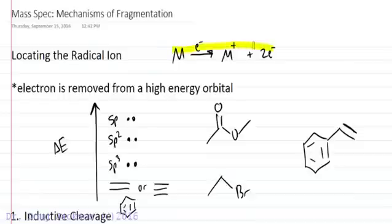So in electron impact ionization, we will take our molecule, our neutral molecule, expose it to an electron beam. It will form the molecular ion and where does that ion charge go? The molecular ion is also a radical, so we put that radical symbol there. The rule of thumb is the electron is going to be removed from a high energy orbital of the molecule, generally in the order that we have drawn.